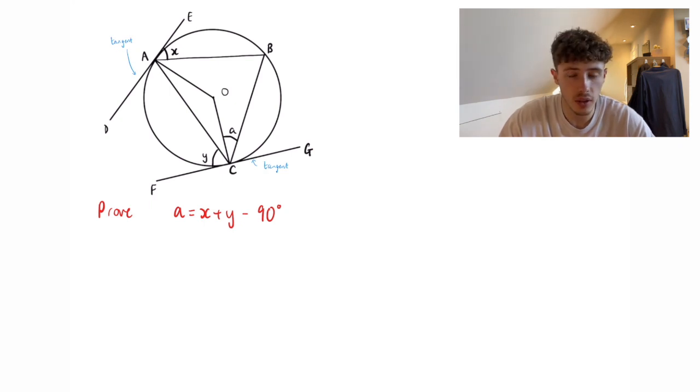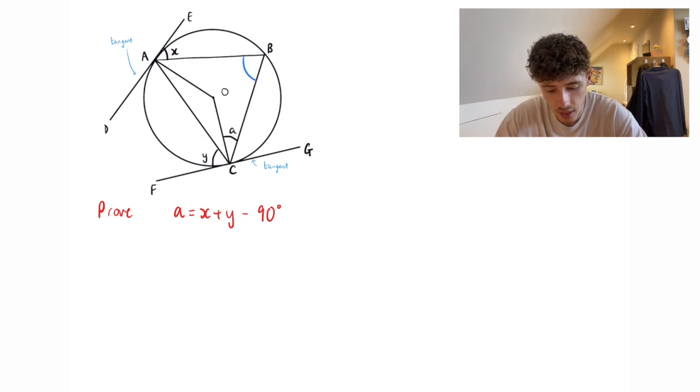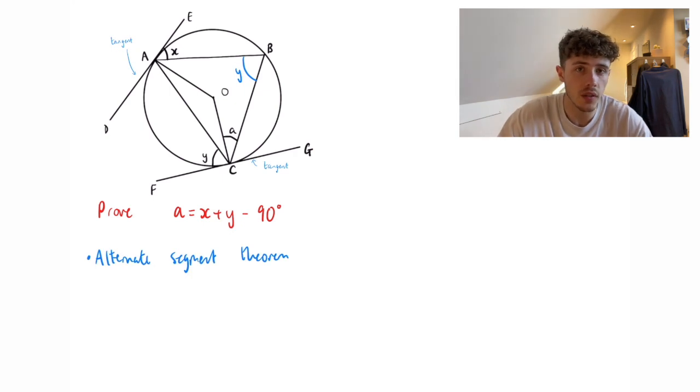So I think the easiest way to do this one is by the alternate segment theorem. We know that angle ABC is also going to equal y. With these type of questions it's very important to make a note of all the circle theorems you use as a form of reasoning behind all your calculations. We also know that the angle at the centre is double the angle at the circumference.